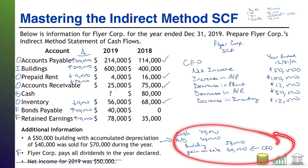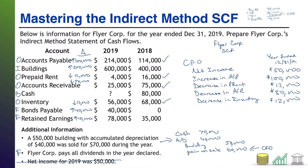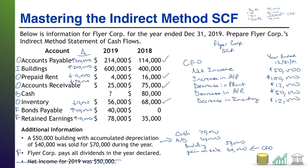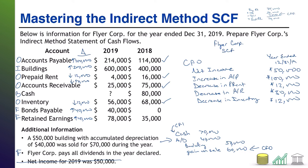Last CFO item is the gain on sale we identified. The gain on sale of $60,000 increases net income, and there was cash associated with it - but that cash is investing activity. The proceeds on the sale are CFI. There is no CFO associated with this gain, but it made net income go up, so we have to back it out. We subtract $60,000 for the gain on sale.